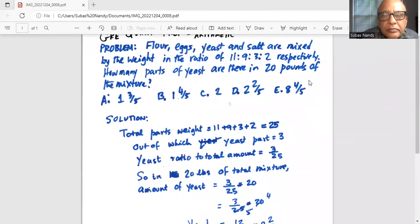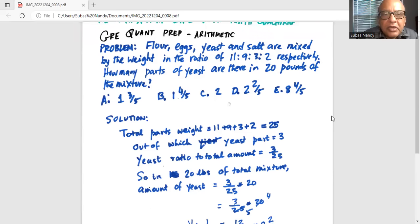Okay, so without further ado, I'll get started. Flour, eggs, yeast, and salt are mixed by the weight in the ratio of 11 is to 9 is to 3 is to 2, respectively. How many parts of yeast are there in 20 pounds of the mixture?